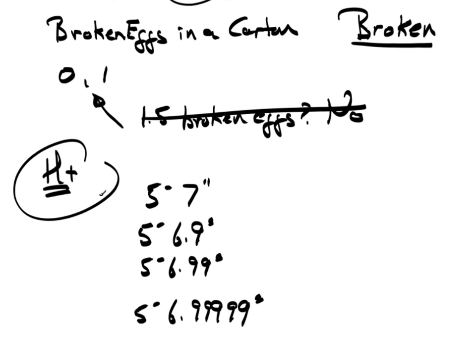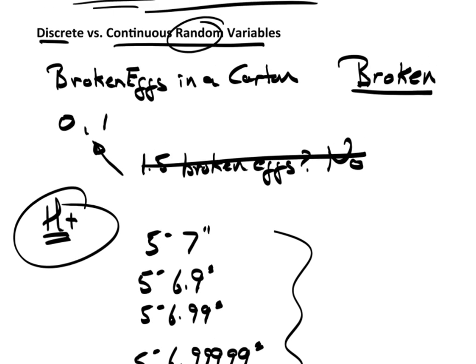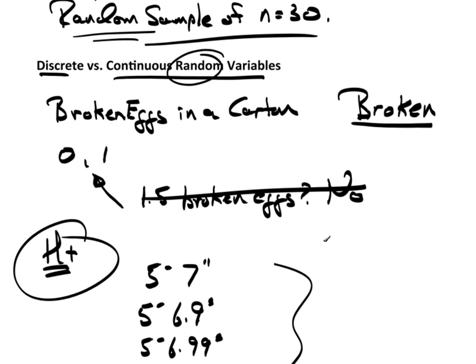So, height would be a continuous random variable because of this sort of game that we can play. And again, this is just a review from a prior chapter. We talked about discrete continuous variables. Now, all I'm adding is this idea of random that whatever it is that we're measuring, the fact we're measuring that item was a result of some type of random process or by chance.